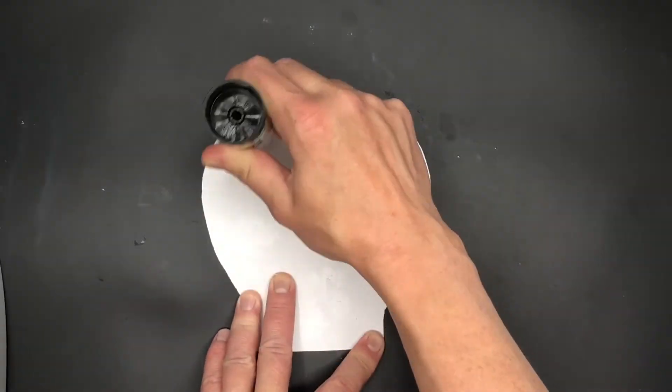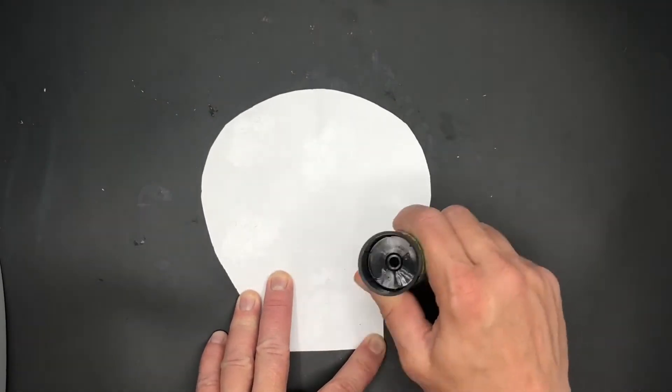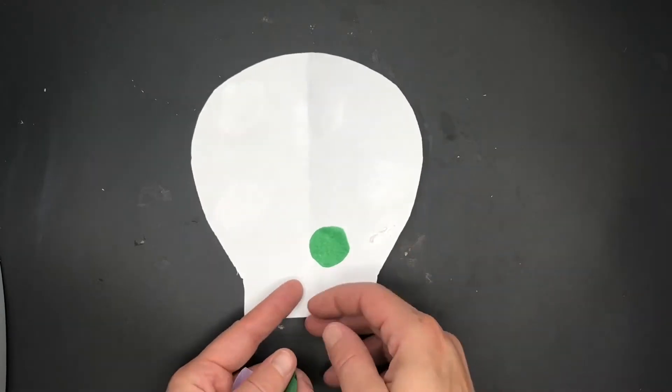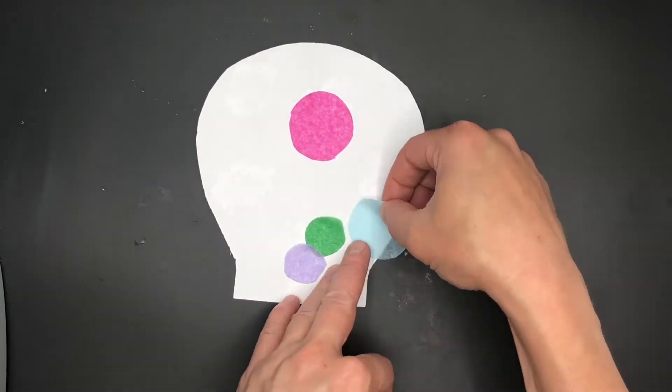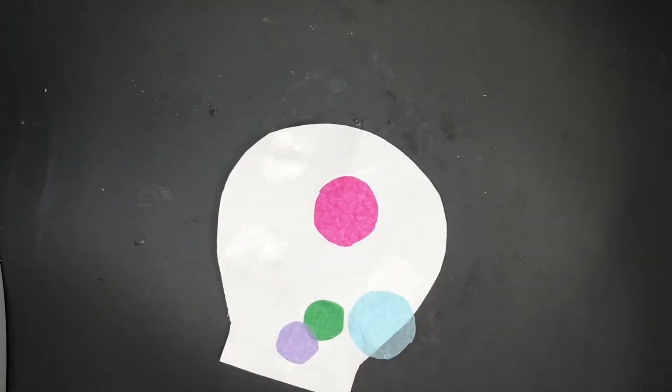Once I've cut all of my balloon shapes out and opened them out I've got to think about decorating them. So here I'm going to use glue and tissue paper to collage different patterns onto my balloon shapes but you can use pens or you could use paint whatever you want really.